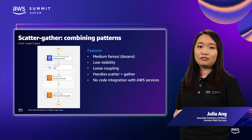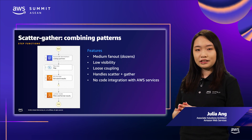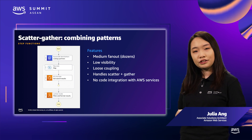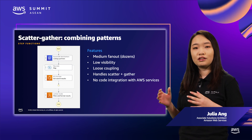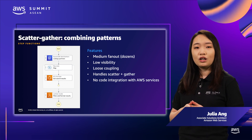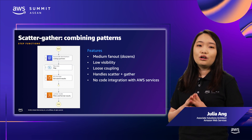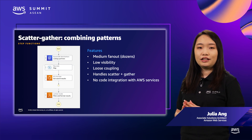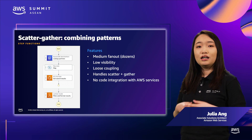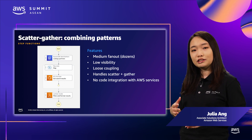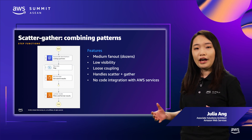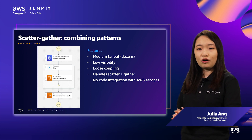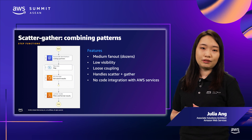Now that we know what Step Functions is, let's reconsider the meta-search use case. Let's say information about all downstream partners is stored in a DynamoDB table. After retrieving the partners, we can trigger search requests in parallel using the map state in Step Functions. Step Functions will wait for all branches of the map state to finish, aggregate the results, and pass them to the last step, which formats and filters results for display.